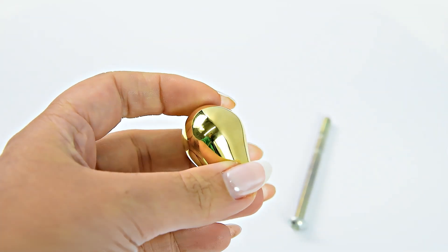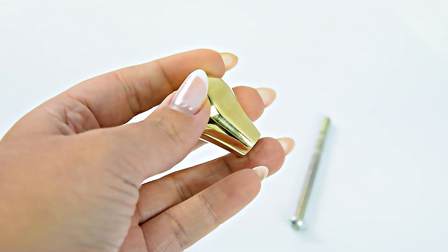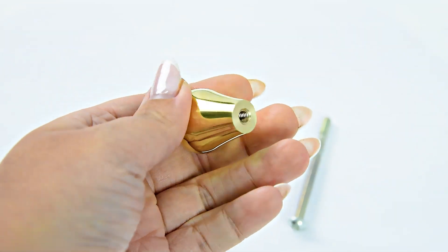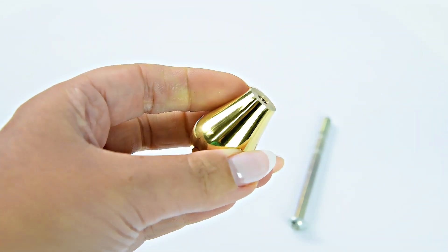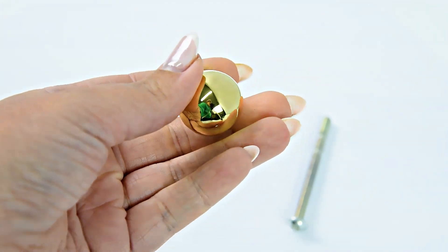This is the Teardrop Cupboard Knob. The shade that this one is in is Polished Brass Unlacquered. We do many different shades, so please have a look under this product code to see which ones we have available.